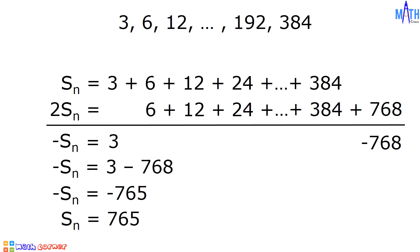S sub n is equal to 765. And 765 is the sum of all the terms of geometric sequence 3, 6, 12 all the way to 384. Let us use this idea in deriving the formula in finding the sum of the terms of a finite geometric sequence.